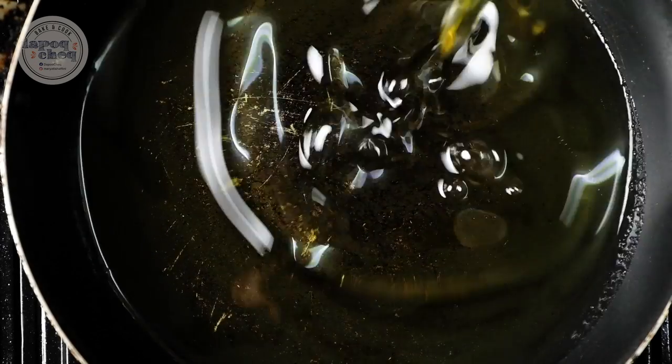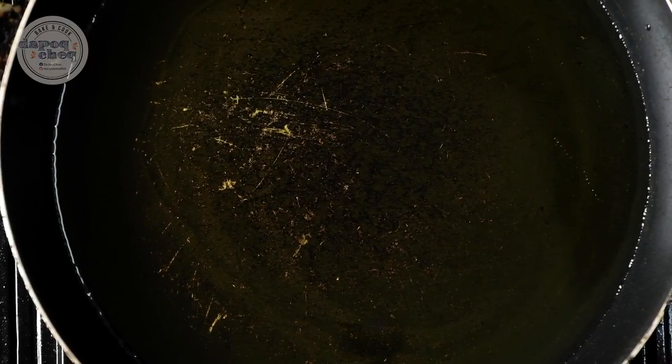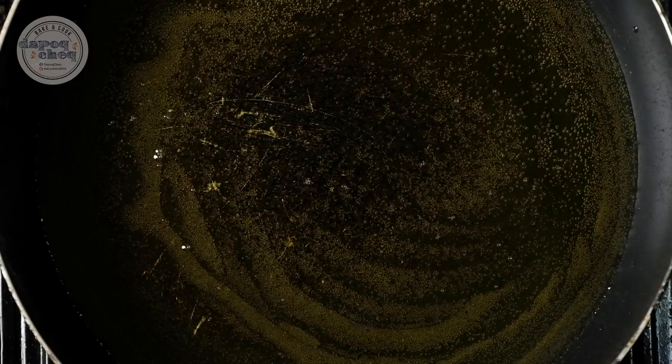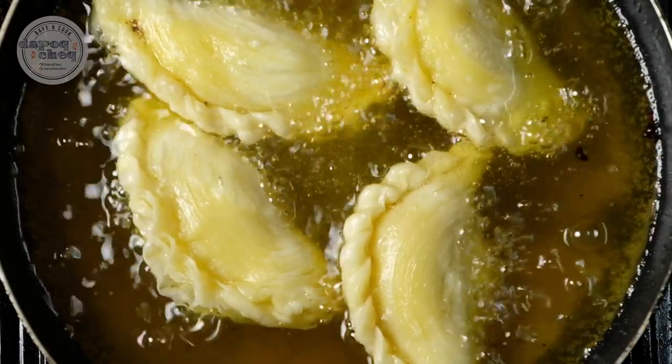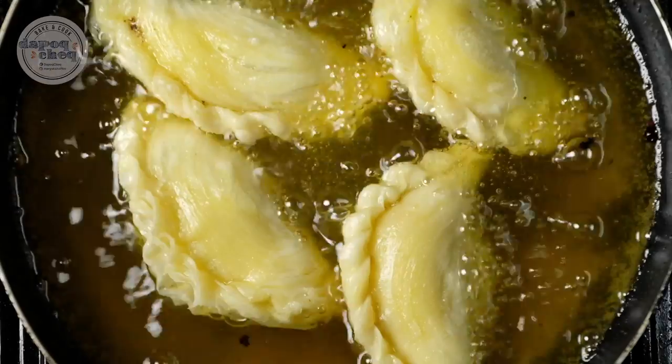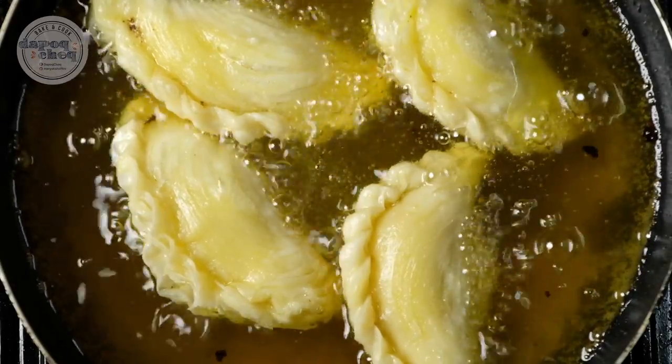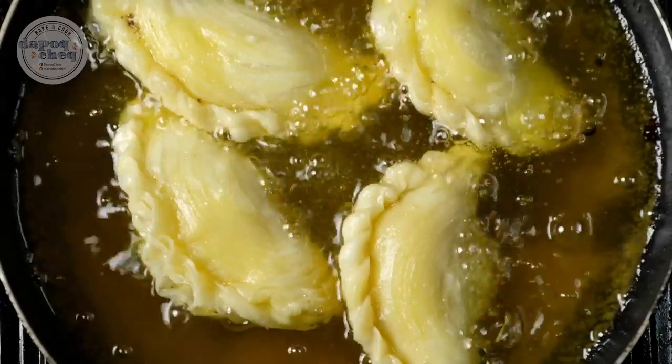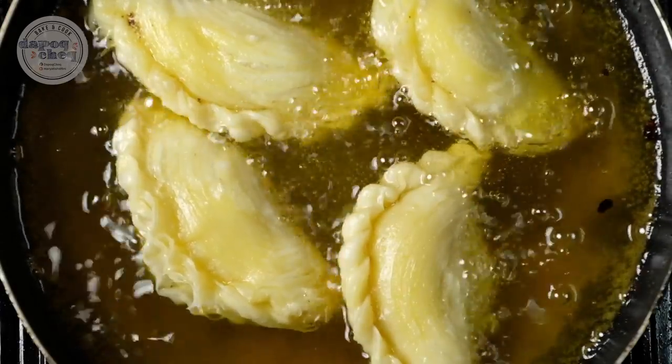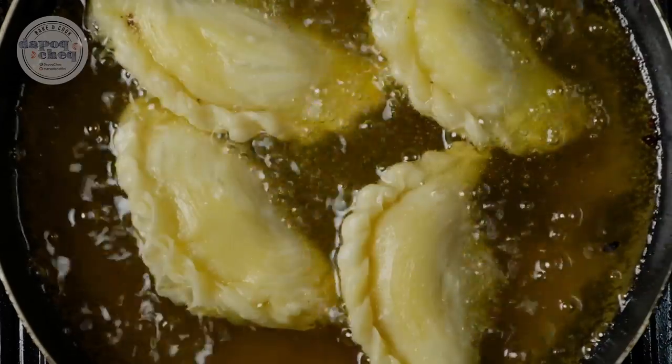Masukkan minyak. Dah ni minyak kena banyak lah, kita deep fry. Api jangan kuat lah, kalau api kuat nanti karipap kita dia hangus tapi dia tak masak properly. Minyak dah panas, jom kita menggoreng. Masukkan karipap kita satu-satu. Jangan bagi padat dalam kuali. Untuk minyak kita bagi tinggal suku karipap je yang dekat permukaan tu. Lepas tu bila dah letak karipap, jangan alih dia selagi dia macam tak brown. Kalau tak dia punya layer tu dia akan pecah. Bagi dia macam one side tu dia dah macam brown sikit, lepas tu baru alih dia, baru terbalikkan dia.